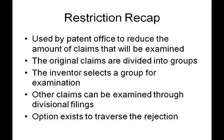Just to recap: restrictions are used by the patent office to reduce the amount of claims that will be examined. The original set of claims are divided into groups, and the inventor has to elect a group for examination. The other claims can be examined through additional patent application filings called divisionals. The applicant also has the option to traverse the rejection if they feel that is the best thing to do. Hopefully this gives you a little introduction into restrictions. It's a fairly common thing, so if you get one, don't panic. Choose carefully what you're planning to elect, especially if you're on a limited budget and need to get something allowed.